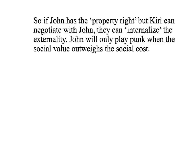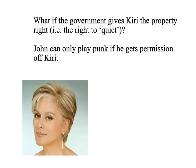We can do this for any value of X, and you'll find that you always get the socially optimal outcome. So if John has the property right — the right to play punk music — but Kiri can negotiate with John, they can internalize the externality. John will only play punk when the social value outweighs the social cost. Now, so far we've given John the property right — and that might be a bit unfair. Hasn't Kiri got a right to peace and quiet?